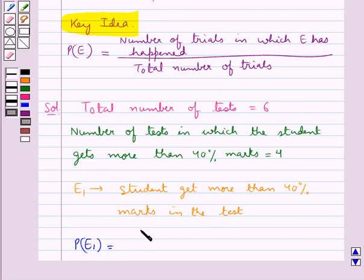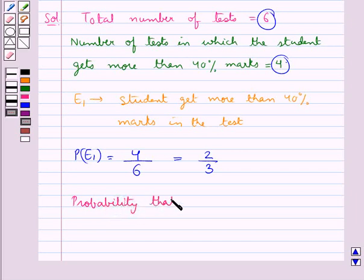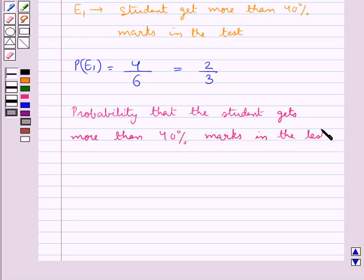The number of tests in which he gets more than 40% marks, that is 4, upon the total number of tests which is 6, and this is equal to 2 upon 3. So we say that the probability that the student gets more than 40% marks in the test is equal to 2 upon 3.